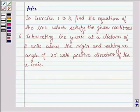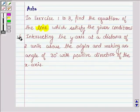Hello and welcome to the session. In exercise 1 to 8, find the equation of the line which satisfies the given condition. Question 6: Intersecting the y-axis at a distance of 2 units above the origin and making an angle of 30 degrees with the positive direction of the x-axis.